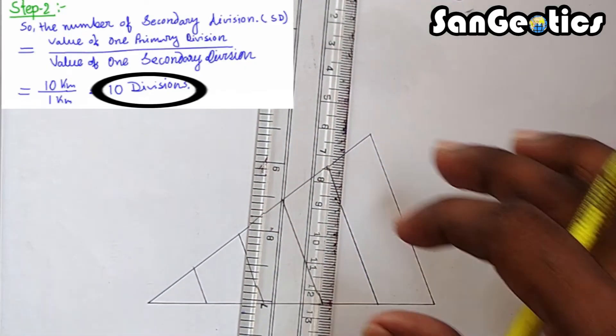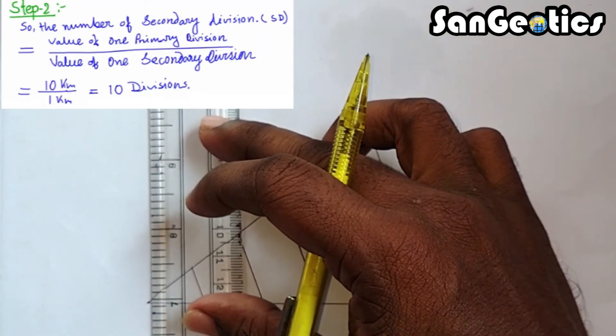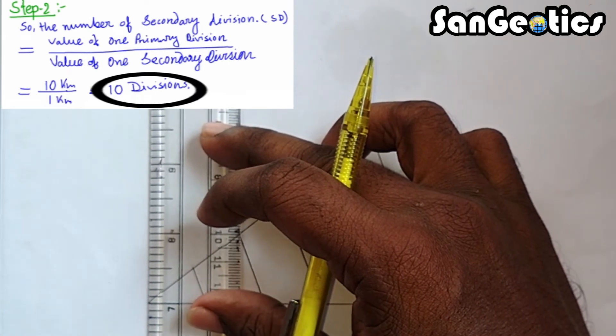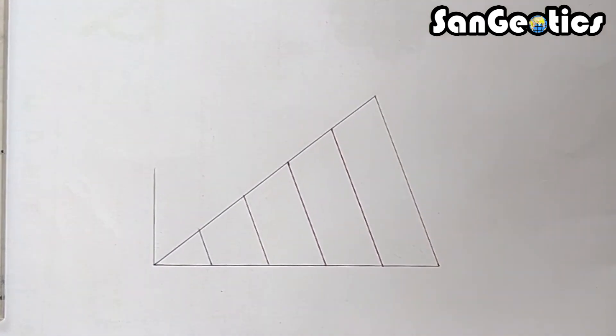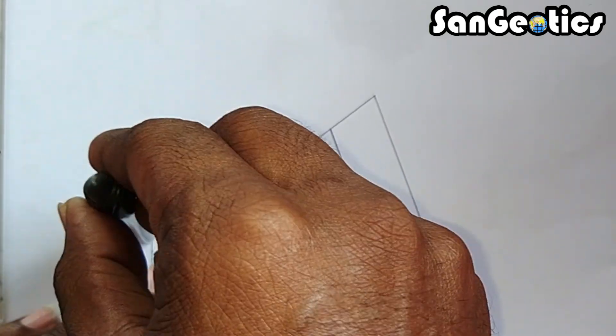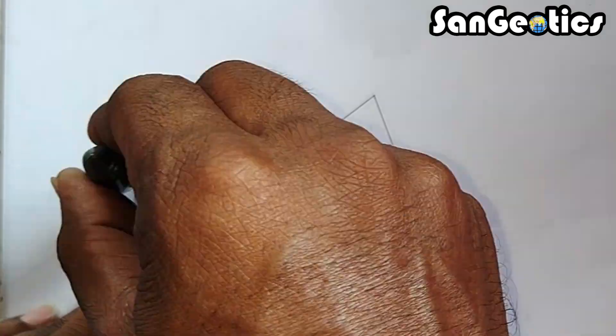For dividing the secondary division, in step 2 of calculation part, we already determined the number of secondary division is 10. So, we draw a small vertical line and divide it into 10 equal parts with the help of pair divider.